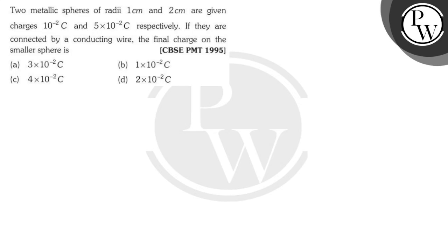Hello everyone, let's read this question. Two metallic spheres of radius 1 centimeter and 2 centimeter are given charges 10 power minus 2 coulombs and 5 into 10 power minus 2 coulombs respectively.